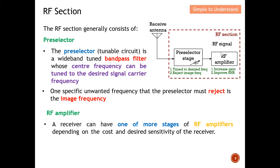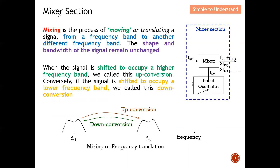Next is the mixer section. Mixing is the process of moving or translating a signal from one frequency band to another frequency band. The shape and bandwidth of the signal remain unchanged — that is the key role of the mixer. It moves the frequency band from one to another, but the original signal's shape and bandwidth must not change.